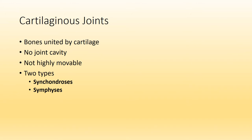The next type of joint based on structural classification is known as a cartilaginous joint. As you may have guessed, joints are united or bound to each other by cartilage. Same as a fibrous joint, there is no cavity present and they are also not highly mobile. We have two types: a synchondrosis and a symphysis. That term 'chondro' means cartilage, so as soon as you see synchondrosis, you should be thinking cartilaginous joint.